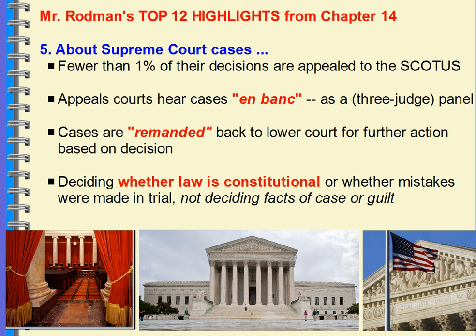Fewer than one percent of decisions are appealed to the Supreme Court. They may get appeals from about 8,000 cases, but they only select about 100 or so to hear over the course of their term, usually starting in September and ending in June. Appeals courts hear cases en banc, meaning a three-judge panel looks at a case. A case can be remanded — the Supreme Court may remand a case back to a lower court for further action, perhaps something the lower court didn't decide, rule on, or take into consideration.